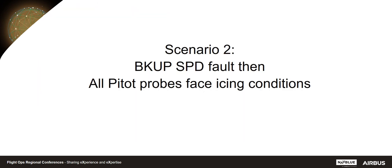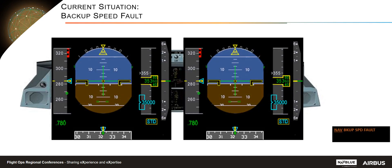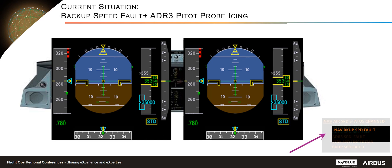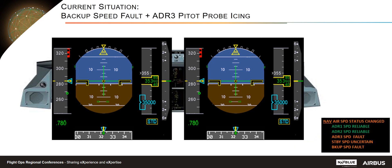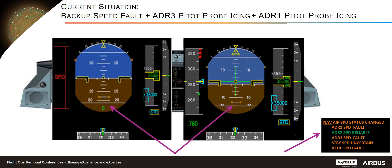The second scenario considers a faulty backup speed combined with successive icing conditions on three pitot probes. During the flight, the backup speed becomes faulty — this may occur if one parameter required to compute backup speed is not available, such as load factor, weight, or angle of attack. Then ADR3 becomes faulty with no impact on aircraft behavior. But ADR1 also becomes faulty, and PFD1 is flagged as usual. I will not detail the actions since they are similar to the previous example.